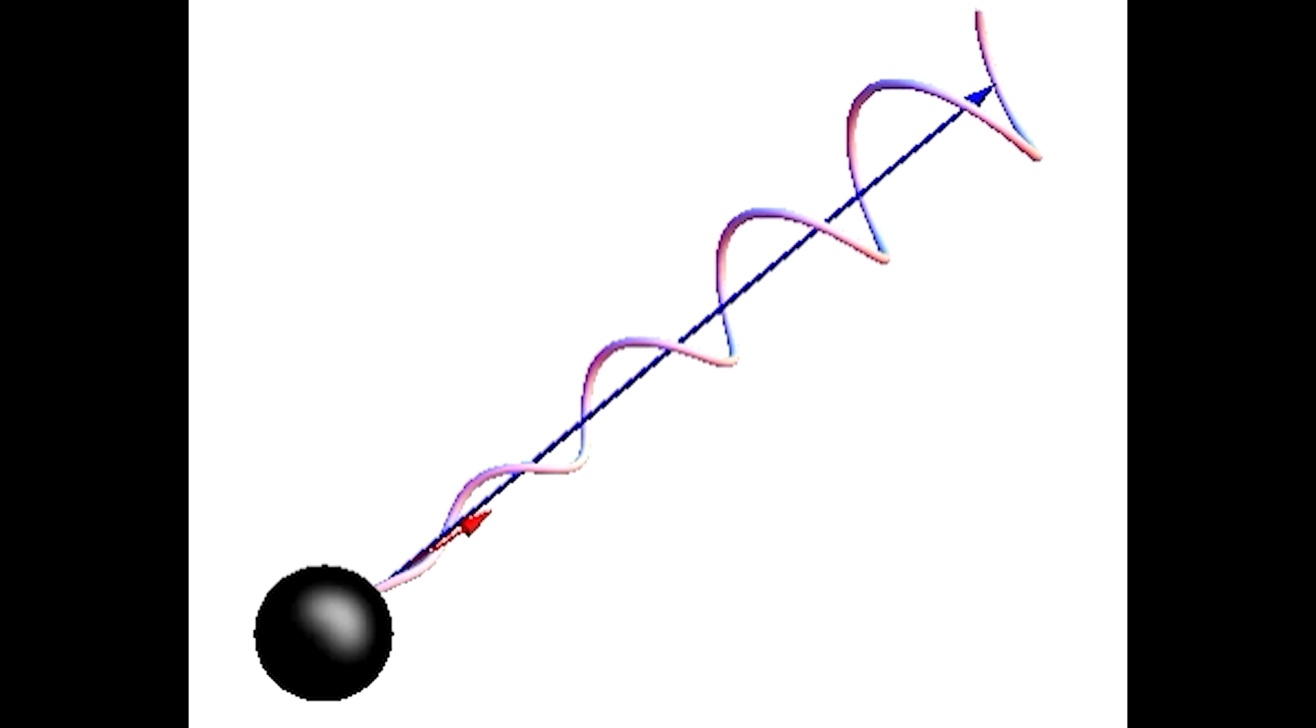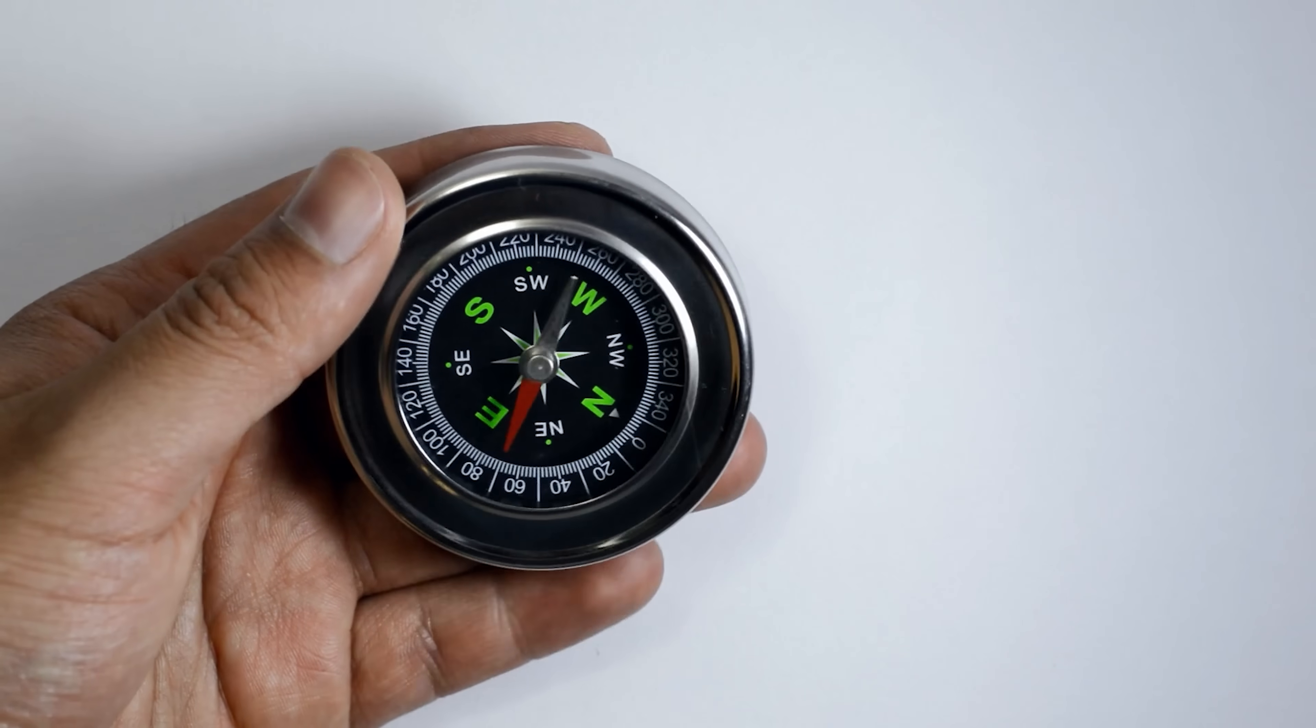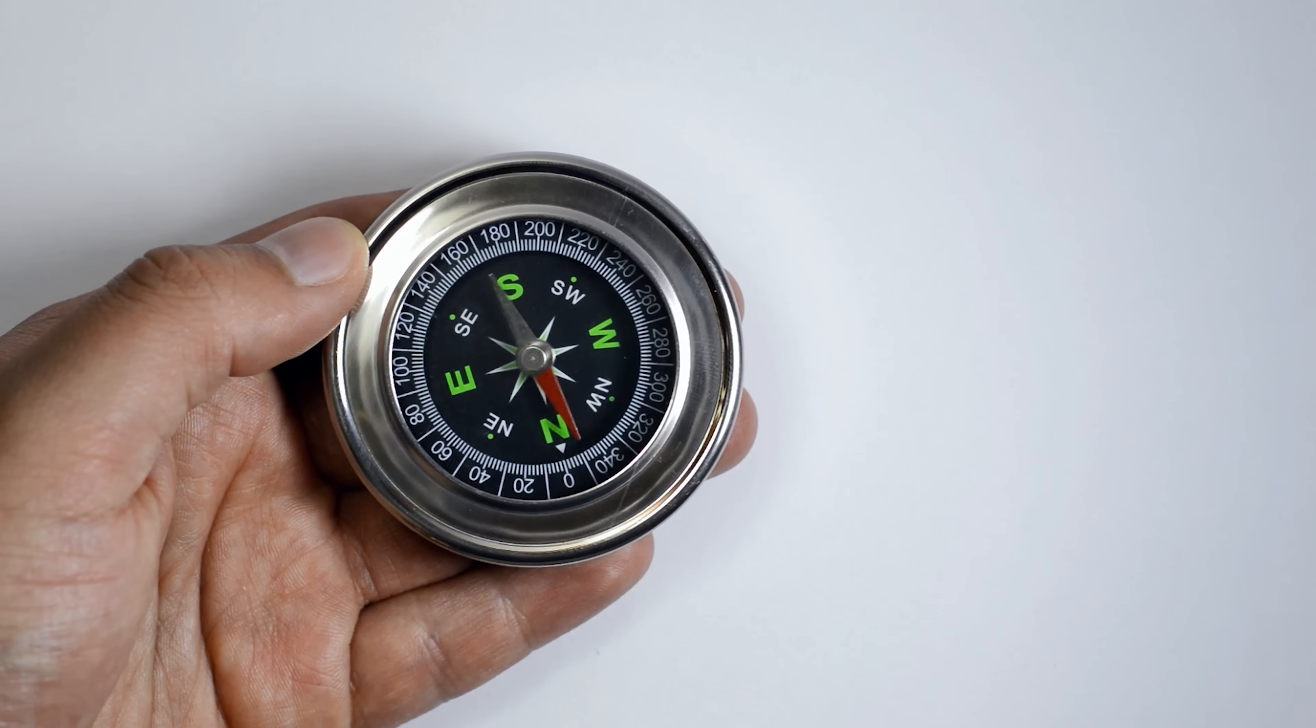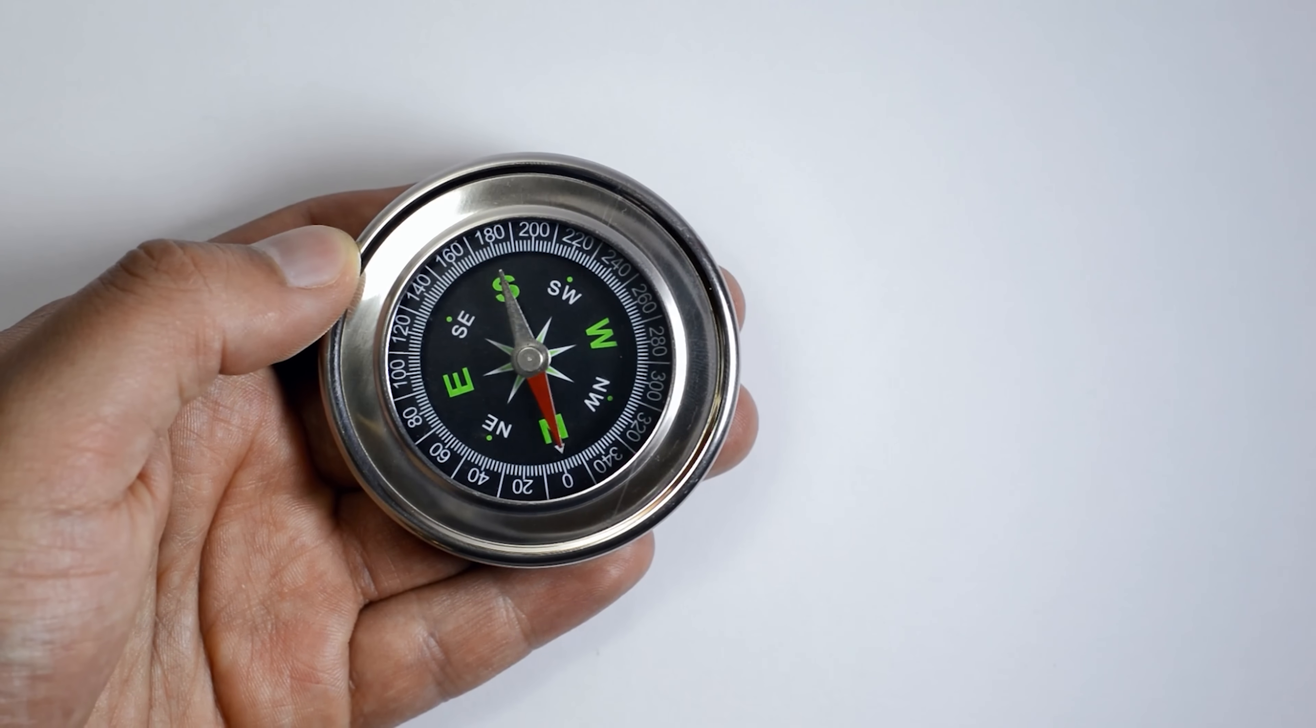But why do we see this light as pulses, rather than a continuously glowing beacon of light shining at us? This is because the magnetic poles of a neutron star are rarely ever aligned with its axis of rotation. Just like on Earth, the magnetic north pole that our compasses point to isn't the actual geographic north pole the Earth rotates around.